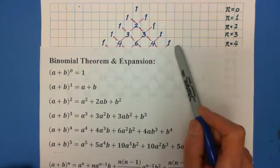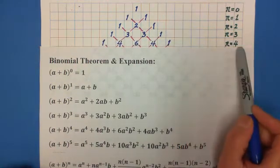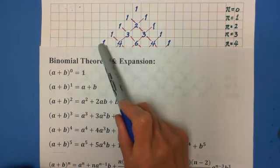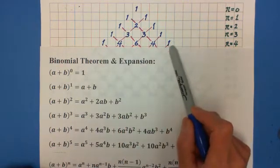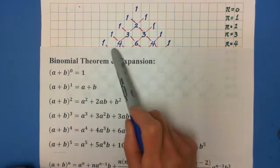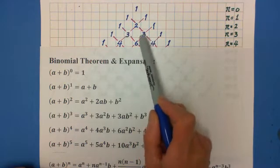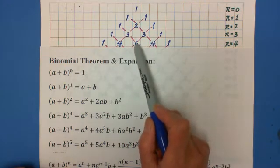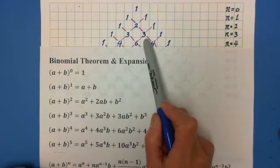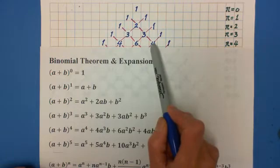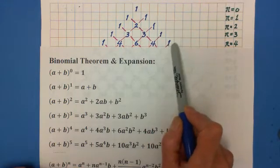If n equals 4, the first one is 1 and the last one is 1. The second one is 1 plus 3 equals 4. The third one is 3 plus 3 equals 6. The fourth one is 3 plus 1 equals 4. The last one is 1. So the row is 1, 4, 6, 4, 1.